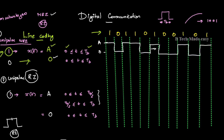For unipolar RZ, one is represented by amplitude A only for half the bit duration, from 0 to TB/2. The full bit duration is TB, but the signal only stays high for TB/2 — that is the half bit duration. From TB/2 to TB, amplitude returns to zero. So one variable has amplitude A only for the first half bit duration TB/2.